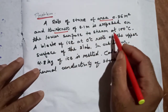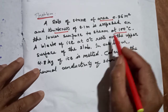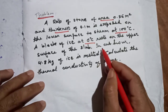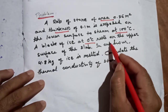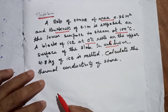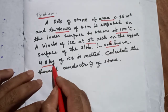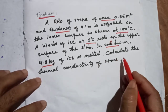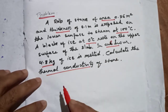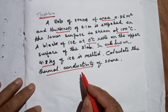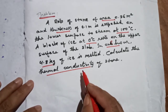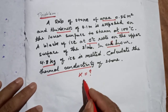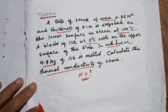The lower surface is exposed to steam at a higher temperature, and a block of ice at the lower temperature. In one hour, 4.8 kg of ice is melted. We are going to calculate the thermal conductivity of the stone — that is, what is the value of k, the coefficient of thermal conduction.